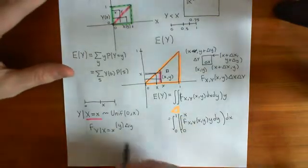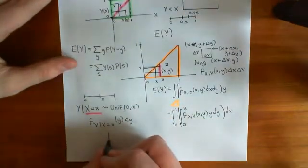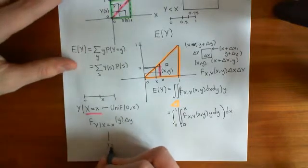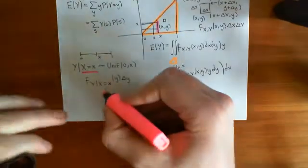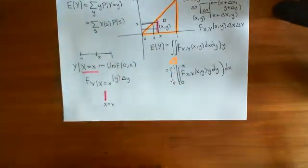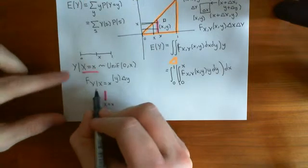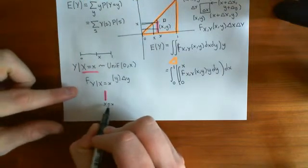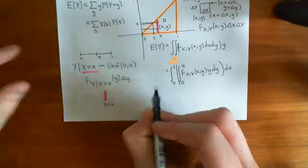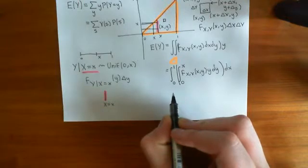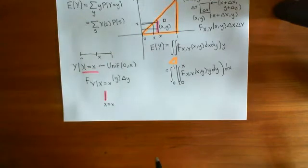Let's think about what this means. If I take out this event that I've conditioned on and put it down here — this is the event that big X is equal to little x — I've removed that event. Basically, if I want to know what the probability density function of the random variable Y is when we've conditioned on big X equal to little x, then I need to obey the way in which you find conditional probabilities.